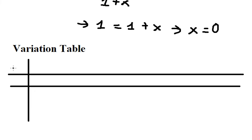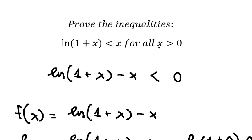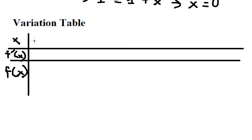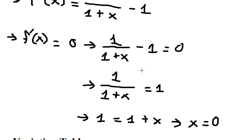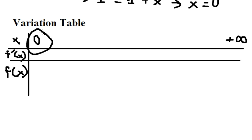So we have x, the first derivative of x, and the original function in the table. Because x is greater than 0, we have 0 here and this goes to positive infinity. So we need to find the sign of the first derivative, and we have 0 here.